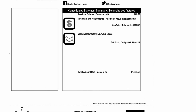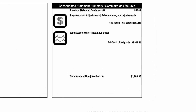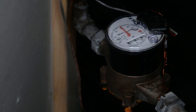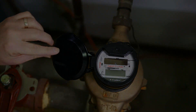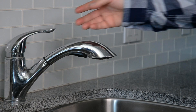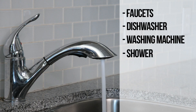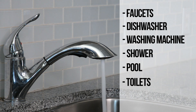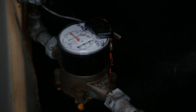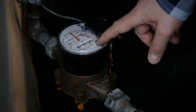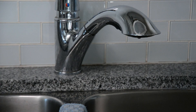You have received a water bill and it's not exactly what you expected. Ever wonder how your water bill is calculated? Every time you turn on your bathroom faucet, dishwasher, washing machine, shower, fill your swimming pool, or flush your toilet, the amount of water you use is accurately measured by your water meter.